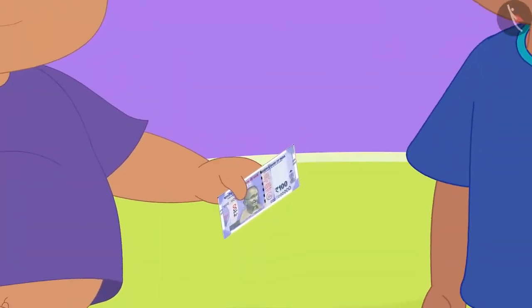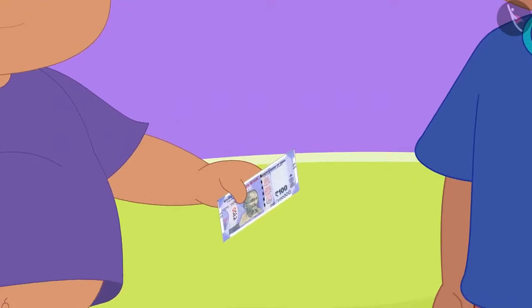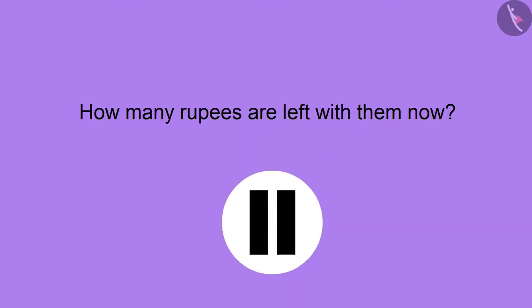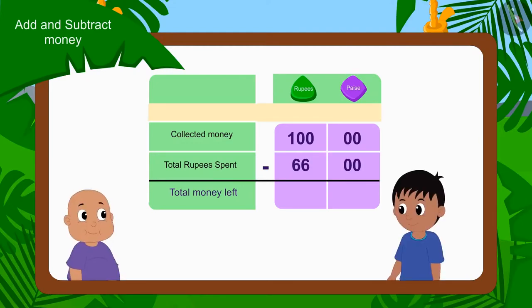Raju and Bablu had 100 rupees in the beginning. So can you tell how many rupees they have left now? If you want, you can pause the video and find the answer. Wow, kids, you have found the right answer. Raju and Bablu now have 34 rupees left. Children, we have used subtraction to find these answers.